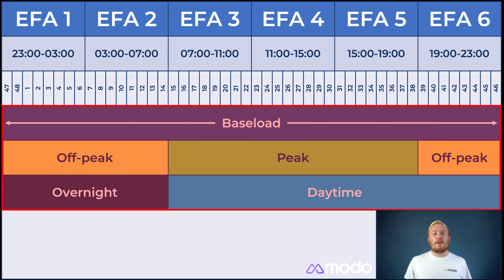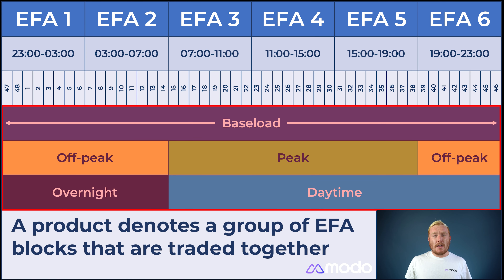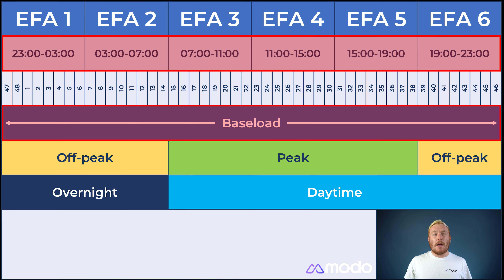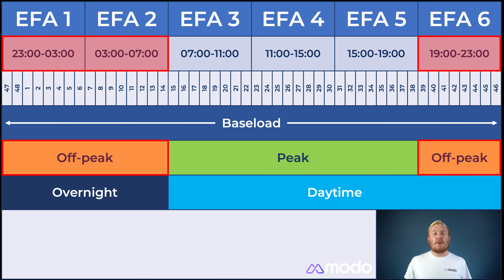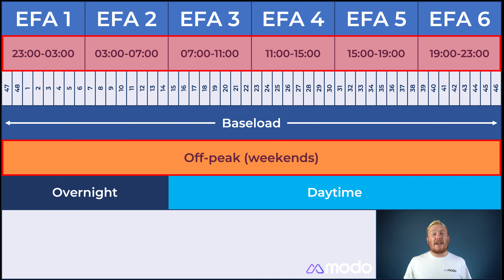The IFA day is also split up by product. Each product denotes a group of IFA blocks that can be traded together. Base load products run across all six IFA blocks from 11pm until 11pm. Peak products run on weekdays only for IFA blocks 3, 4 and 5, so from 7am until 7pm. Off-peak products take in blocks 1, 2 and 6 on weekdays from 7pm until 7am, and all six blocks on weekends.